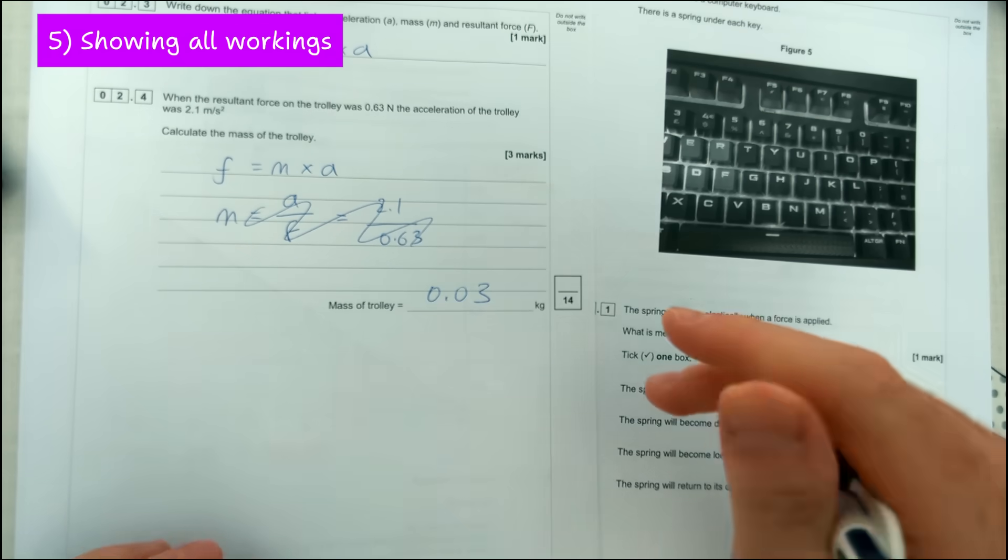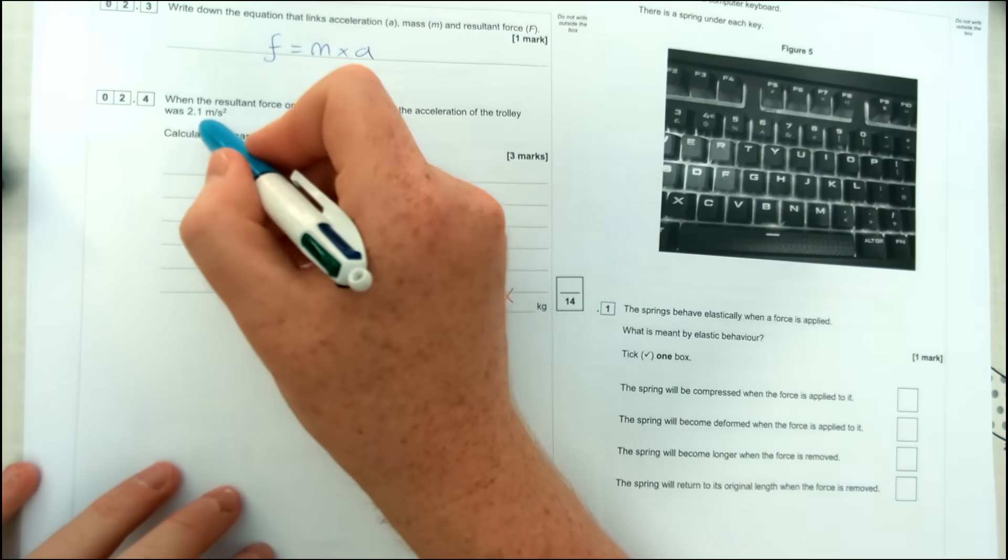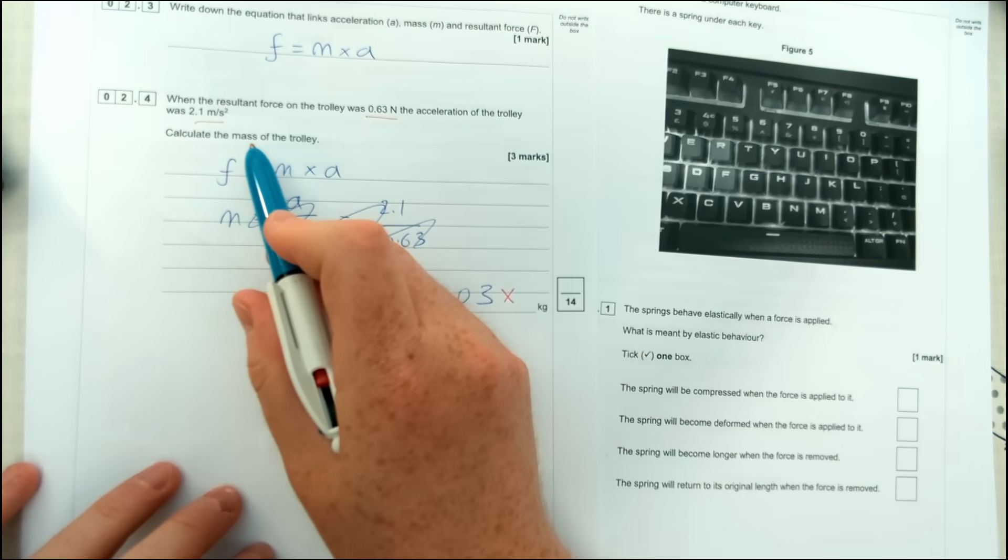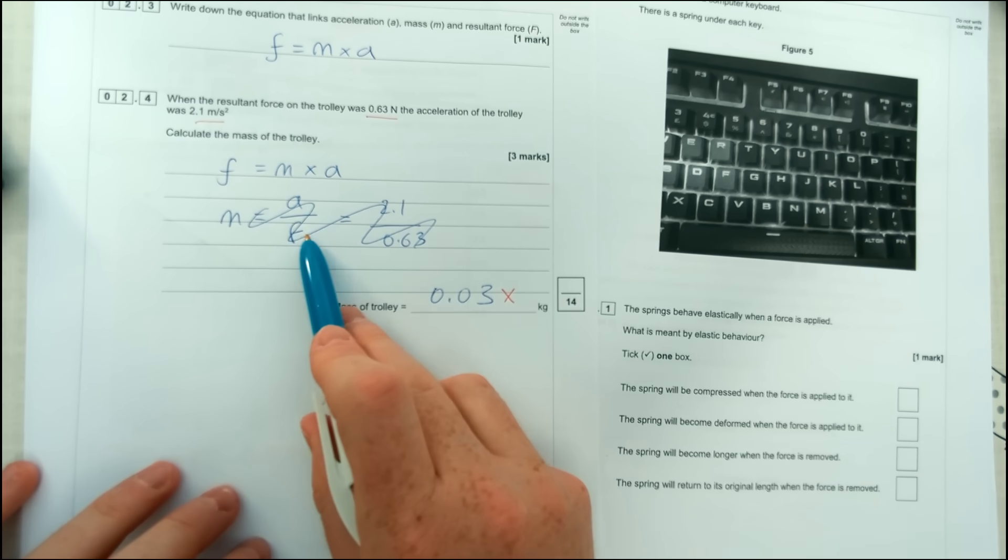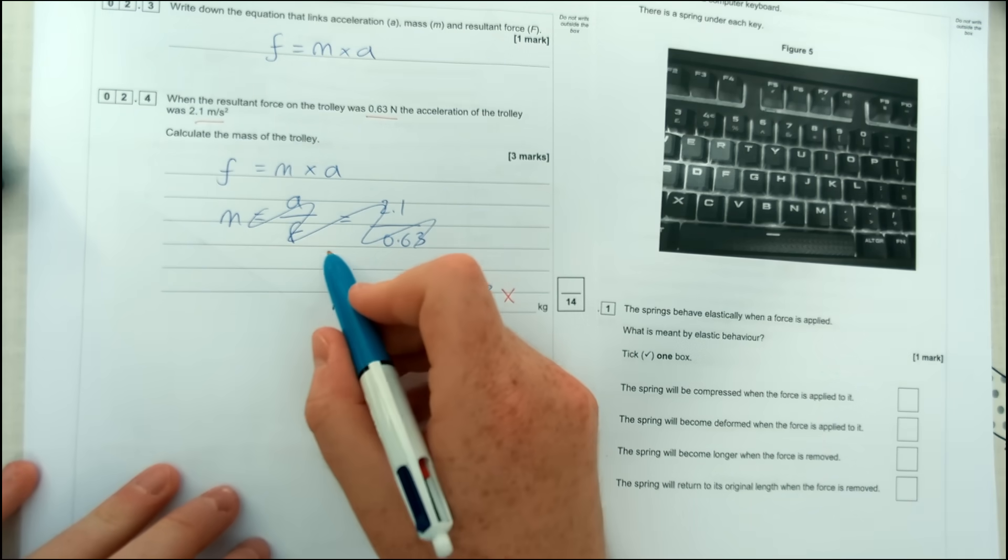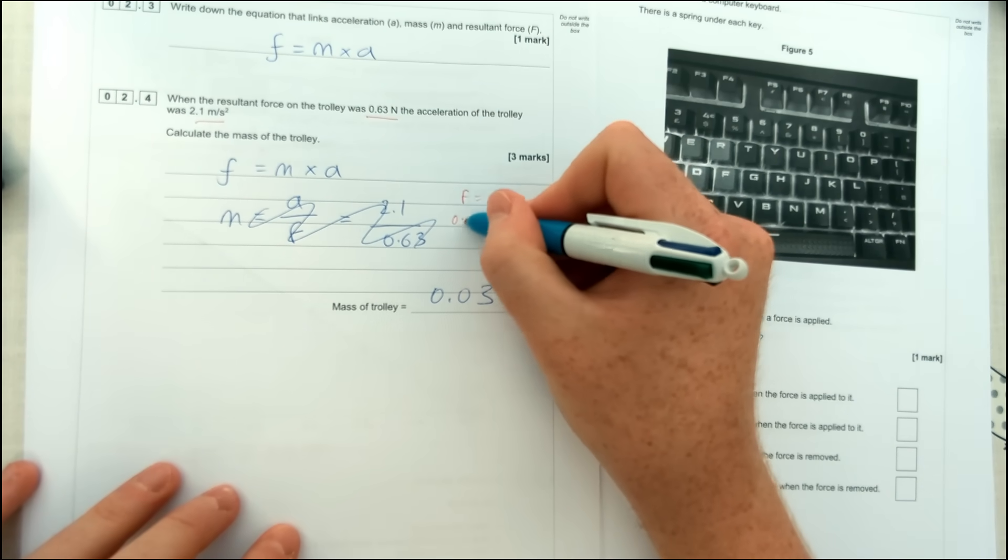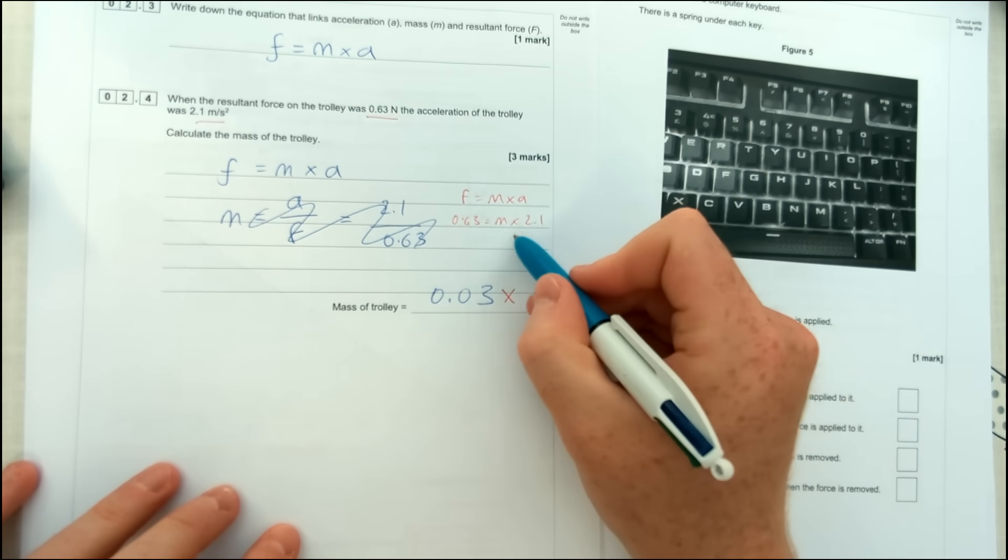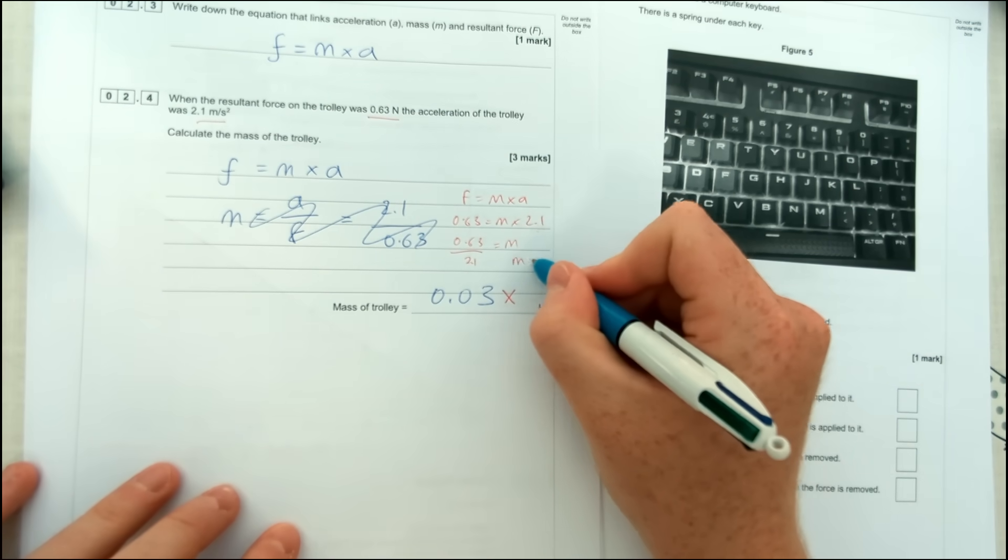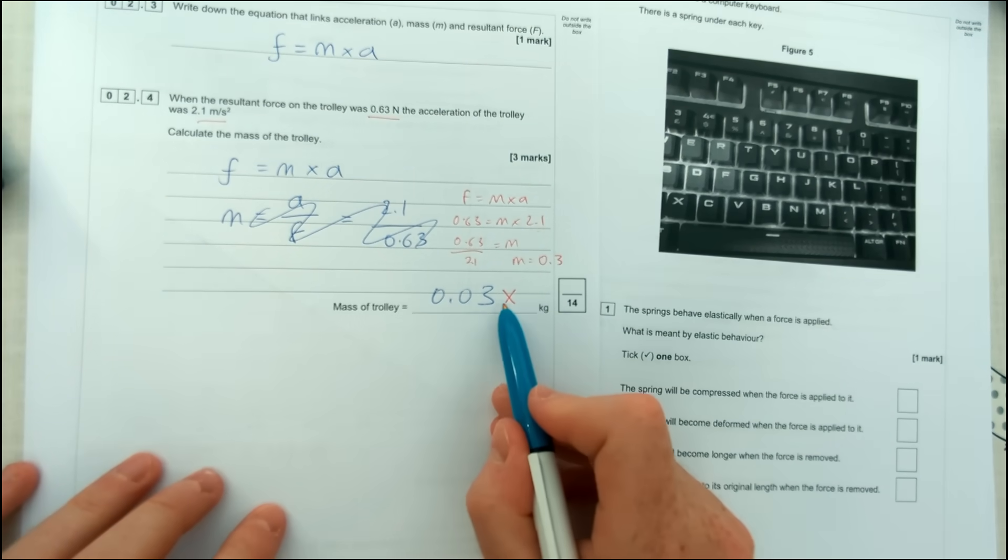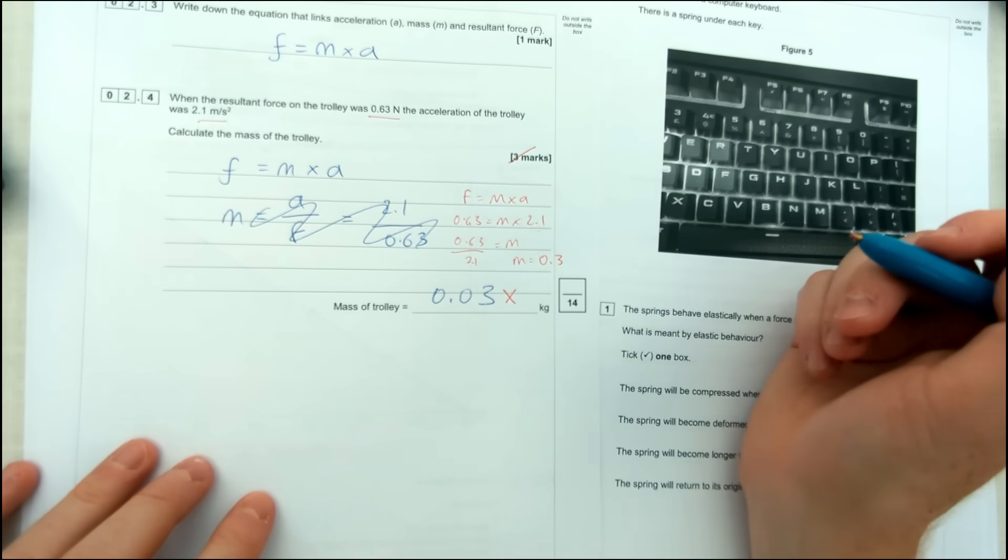Another calculation question here where the student's put down the correct formula but they haven't got marks for this question even though I think they tried to do the right thing in the end. So for this question we've got acceleration and resultant force, we're trying to find the mass of the trolley, so we've got to use this equation here. Now initially I can see that they've actually crossed out some incorrect working. Then what I think they've done is do the force divided by the acceleration. However, because they have no valid workings and they've just messed up a simple decimal place, I cannot give them any marks for this question.